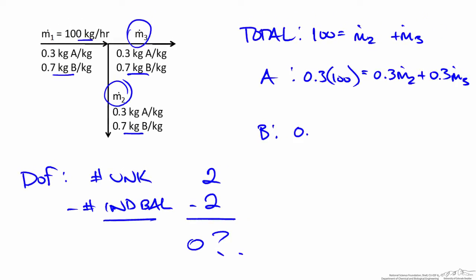Similarly for species B we have 0.7 times 100, and that equals 0.7 times M2 plus 0.7 times M3. If we look closer at the species balances A and B we can show that these are essentially the same equation.